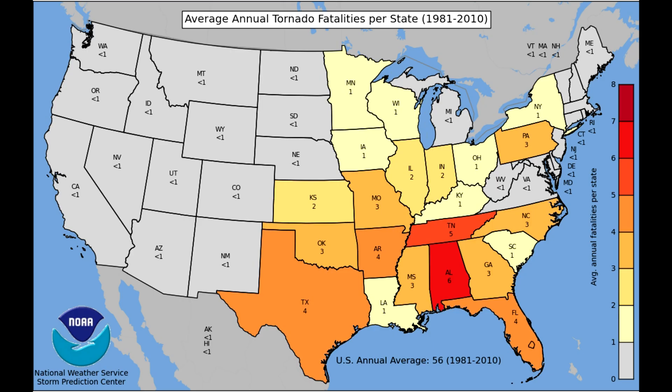For example, you can look at the shift in tornado alley, which used to be more in the central Great Plains but is now moving south and east, with Mississippi and Alabama being almost right there with Oklahoma and Kansas.